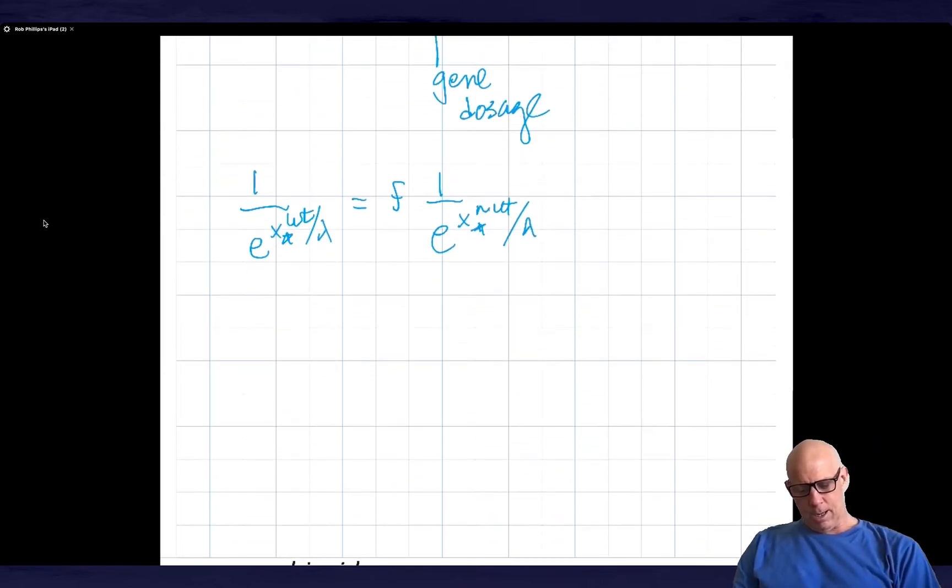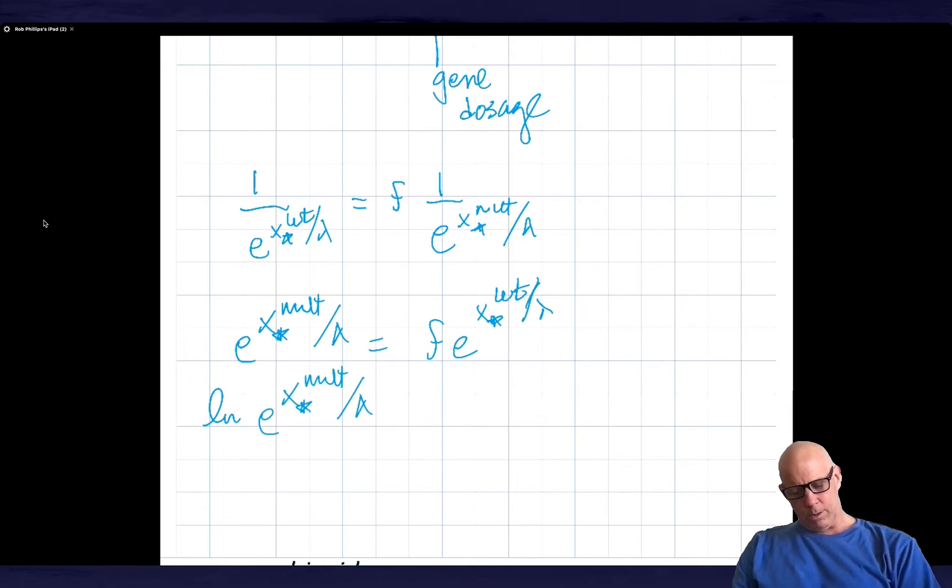And this tells me that e to the x star mutant divided by lambda is equal to f e to the x star wild type divided by lambda. And now I take the log of both sides. Let me be more careful. So log of this quantity is going to be equal to the log of this quantity.